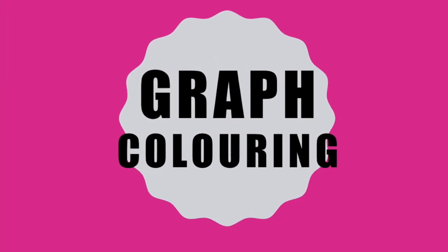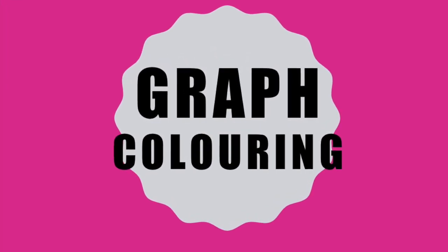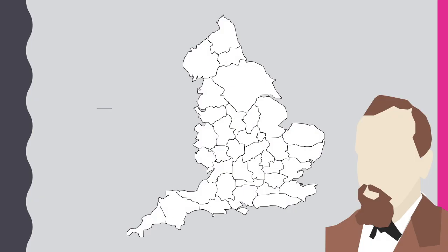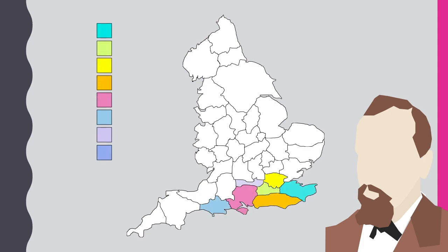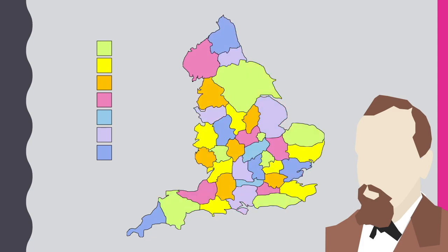The idea of graph colouring arose when a mathematician and botanist called Francis Guthrie was trying to colour county maps of England and noticed that four colours seemed like it was enough to colour any map so that no two countries sharing a border were the same colour.